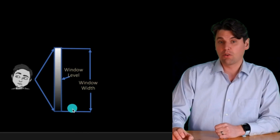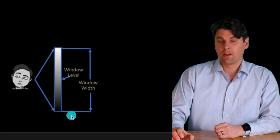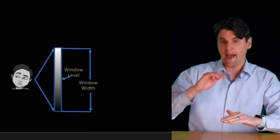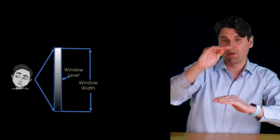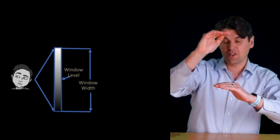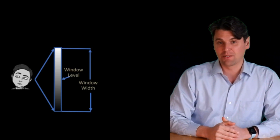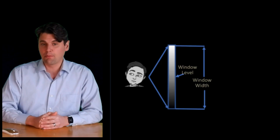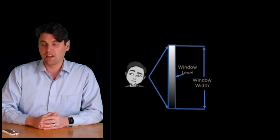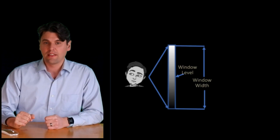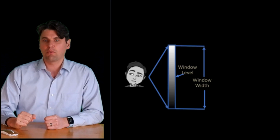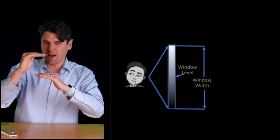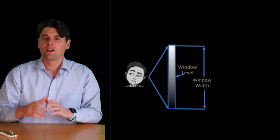The window width is the range of values from black to white, and the window level determines where that window is actually positioned in the grayscale values. Because your eye is not great at differentiating more than about 30 grayscale values, the idea is that we want to focus down on which grayscale values to show depending on the task.